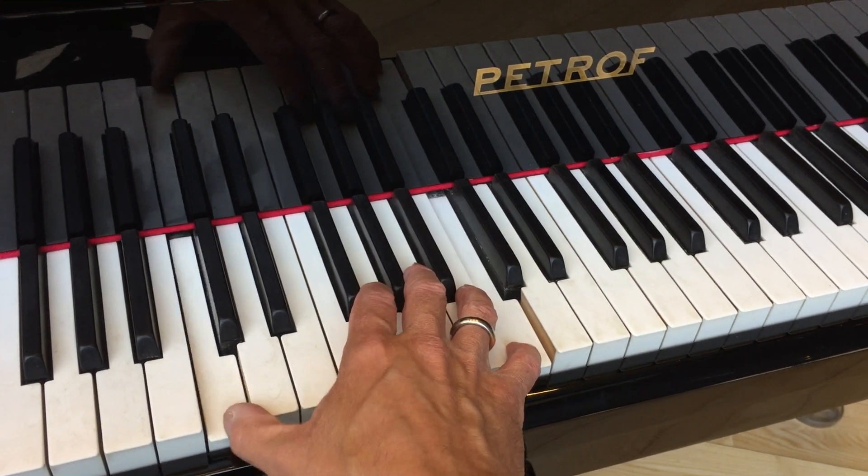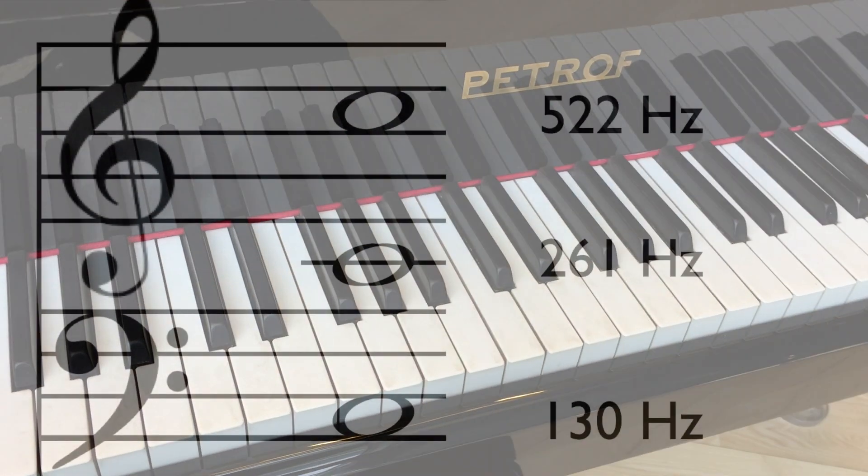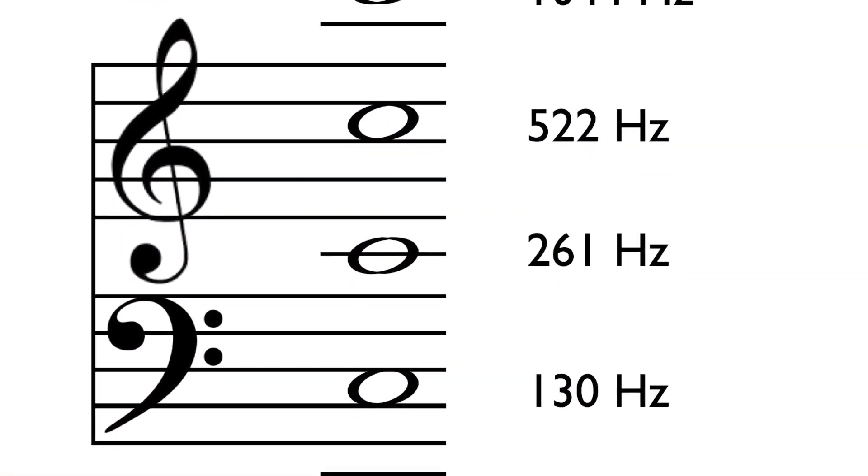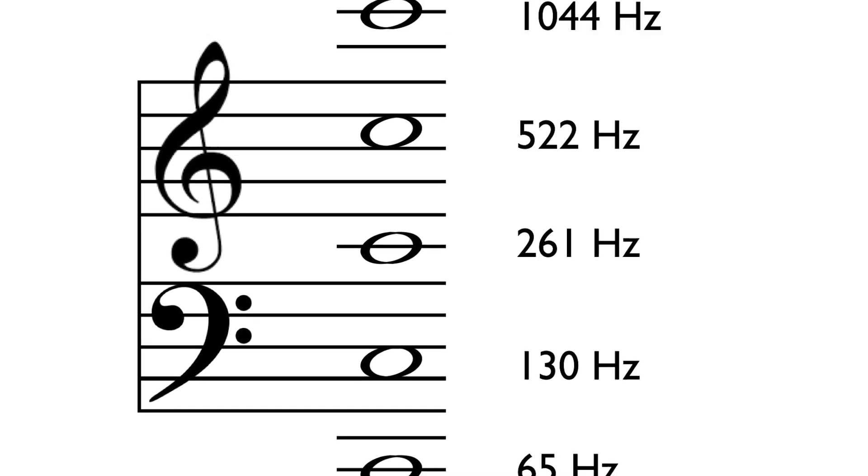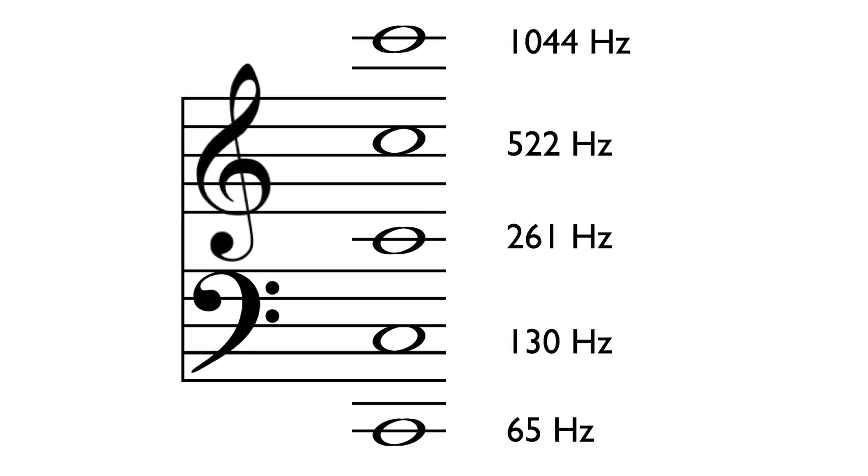In the same way, every time you go down by one octave, you half the frequency. So half of 261 will be 130 and a little bit, and half of that is going to be 65 and a little bit hertz, or 65 cycles per second.